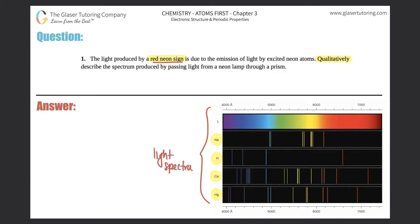So we just have to talk about what neon would look like qualitatively. Now qualitatively means no math. So you're just describing what's going on. So for each element, it seems like they're all producing individual lines.